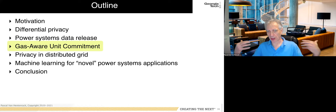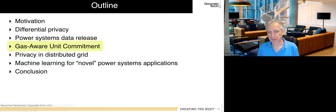Using differential privacy and bi-level optimization you can release datasets that are extremely close to the original, satisfy the same cost and feasibility constraints, but still provide privacy guarantees.